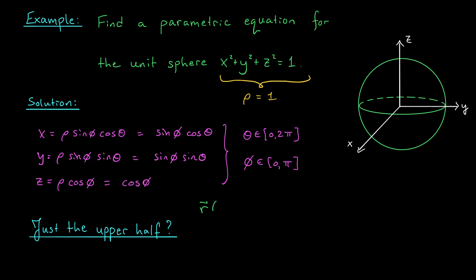And there you go. We have a parametric equation. R of θ, φ, these are our parameters, equals sine φ cos θ, sine φ sine θ, and cos φ, where θ and φ are restricted to these intervals.